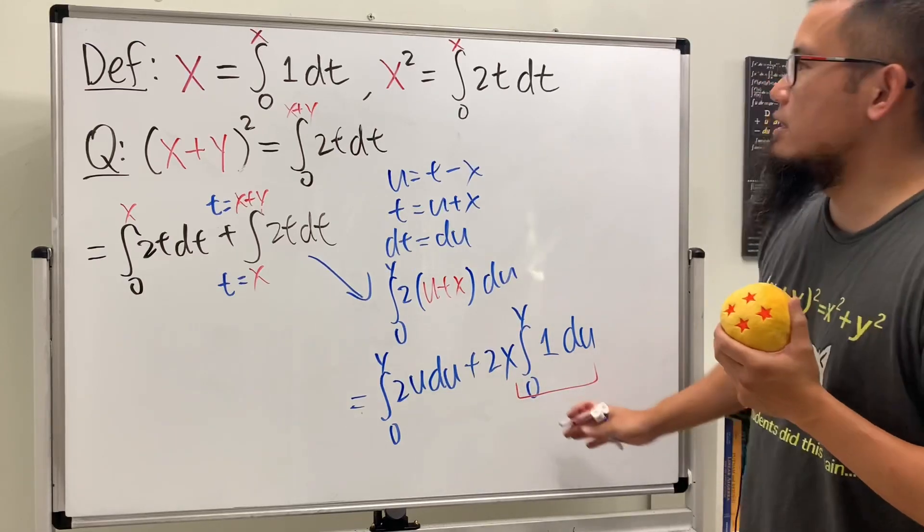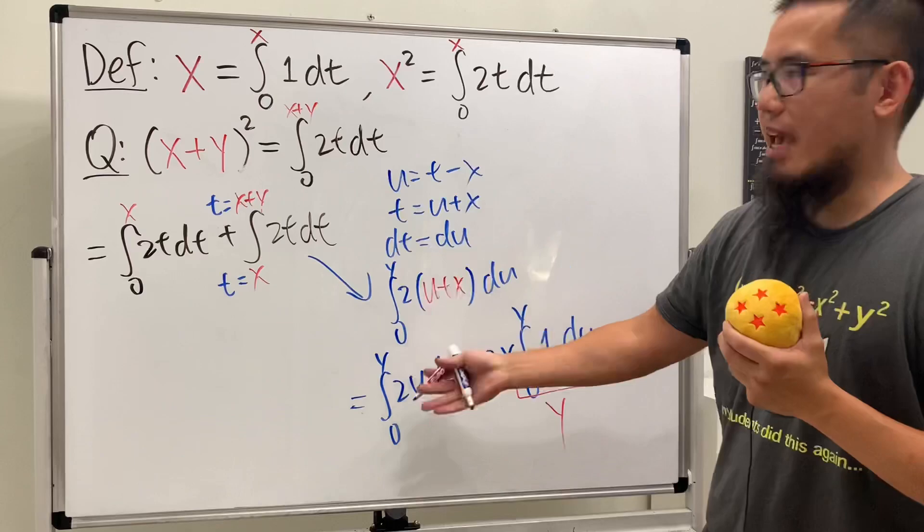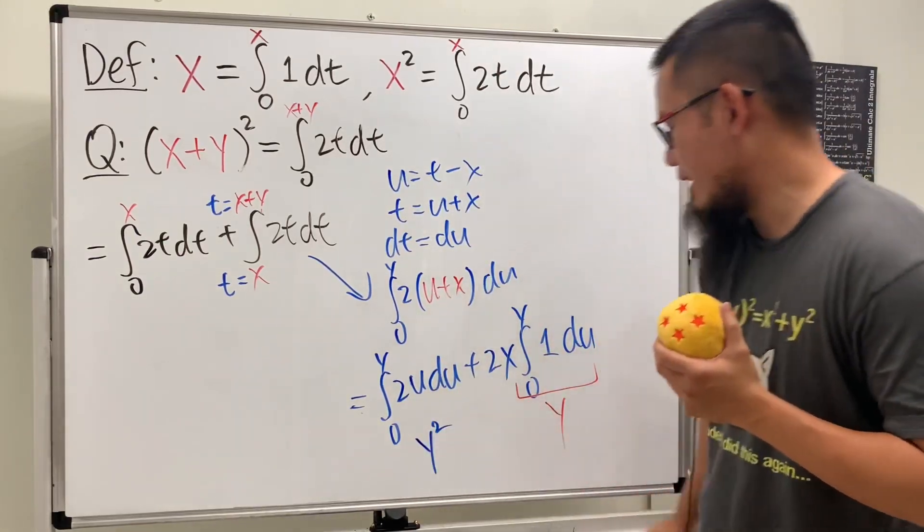This is equal to what? Yes, it's just equal to y. And this is equal to what? Yes, it's going to be equal to y squared. Very nice, right?